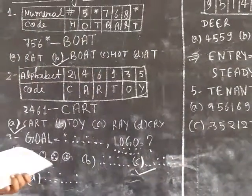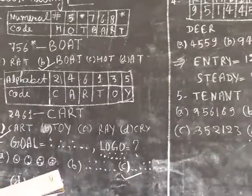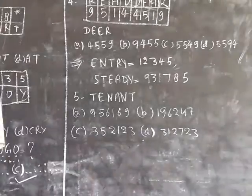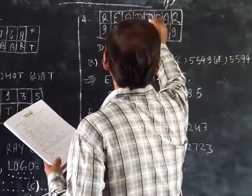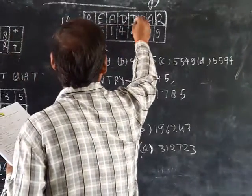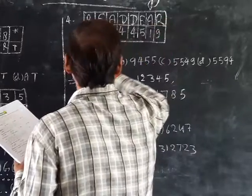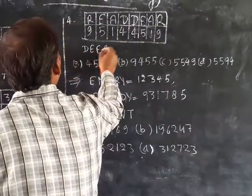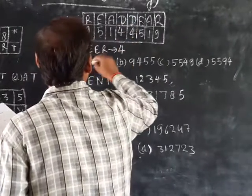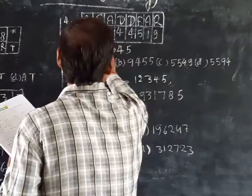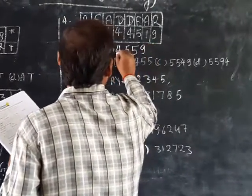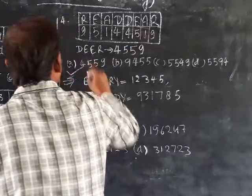Next, question number 4: if in a certain language READ is coded as RDBD, where R means 9, E means 5, A means 1, D means 4, then DEER would be coded as: D is 4, E is 5, E is 5, R is 9. So DEER equals 4559. This is part number A.